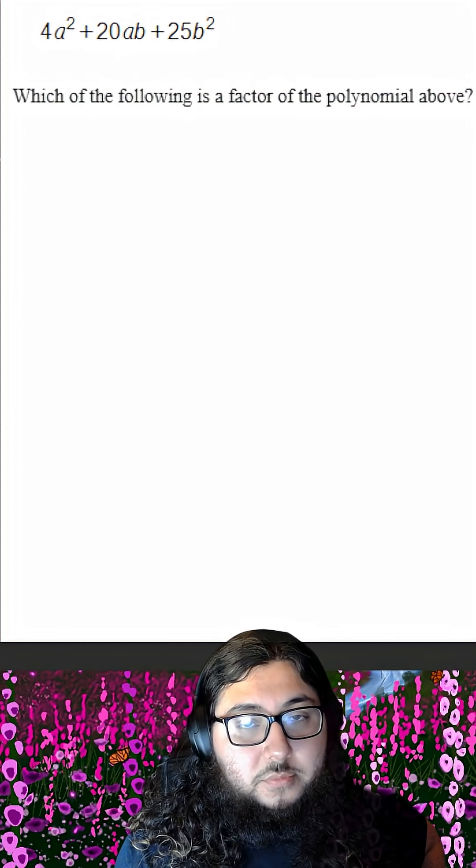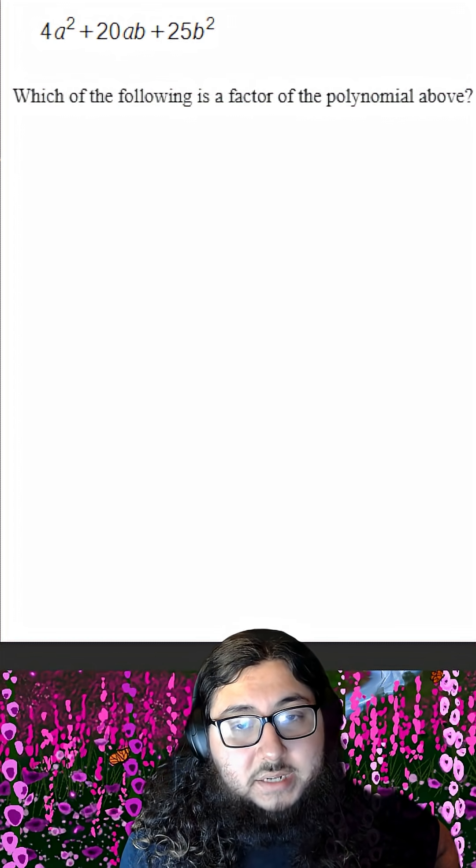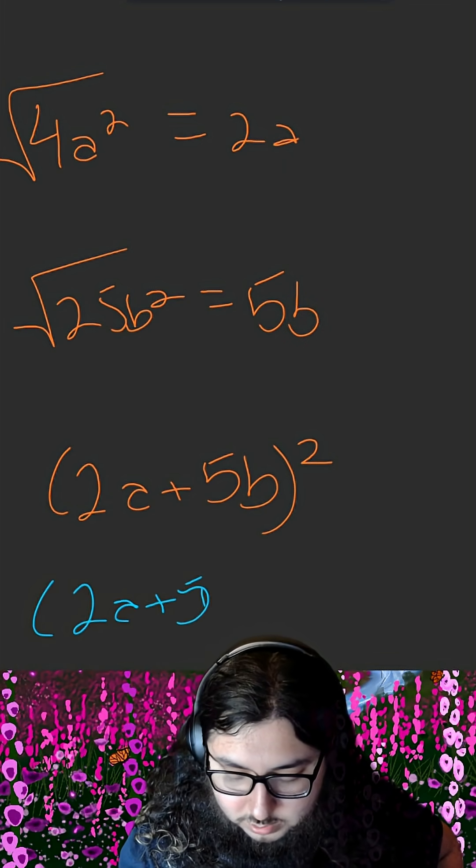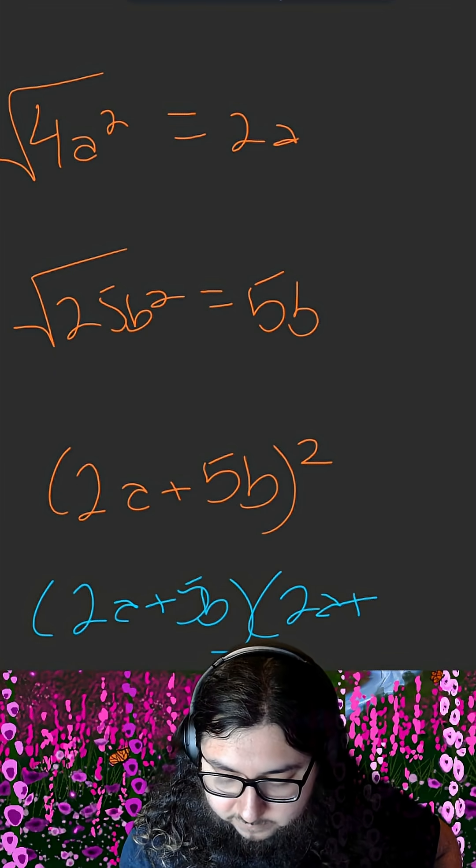Factors of a number X are two numbers which multiply together to get X. In this case, we have 2A plus 5B squared, which is the same thing as 2A plus 5B times 2A plus 5B.